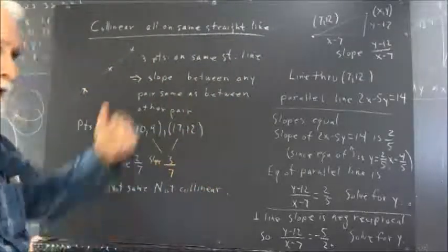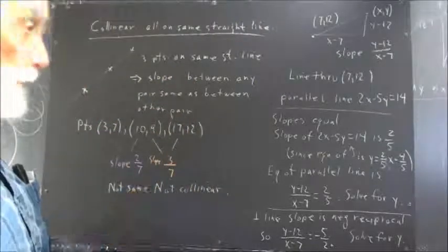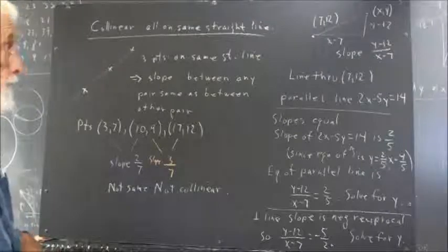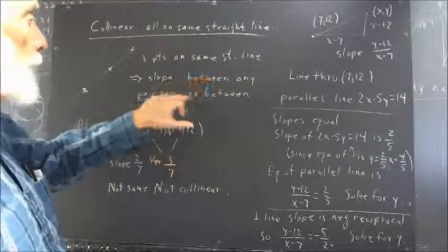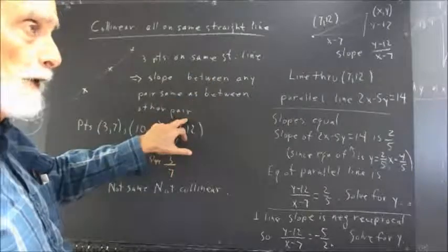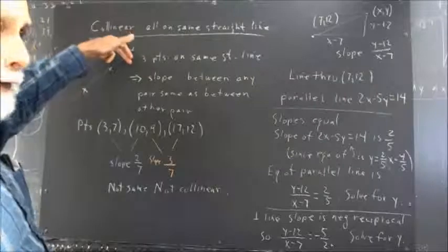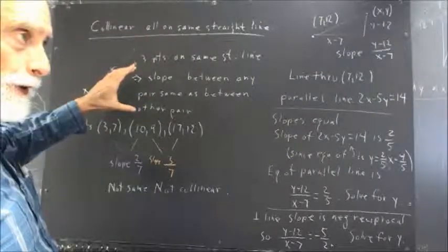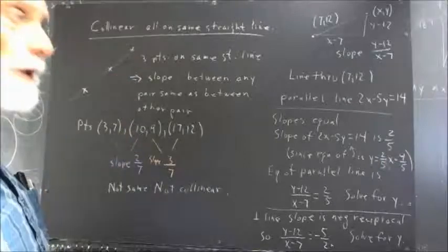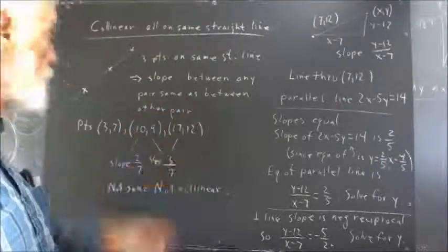Now, two points, of course, are automatically collinear. Any more than two, you've got to check it out. So that means if you've got three points on the same straight line, the slope between any pair is the same as between any other pair. The same statement would hold if you had any number of points. Slope between any pair has to be the same as the slope between any other pair because the slope between any two points on a straight line has to be the same.